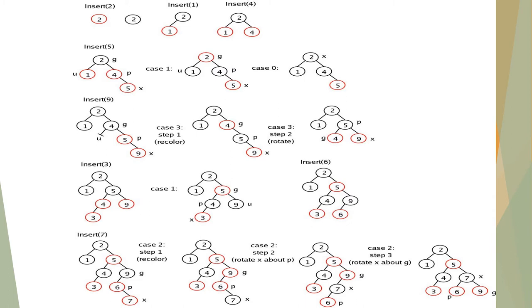Here we need to change the color. So node 4 is changed to black and node 2 is changed to red color. But the root node should be in black color, so make it black.